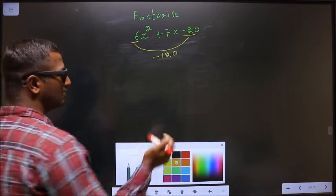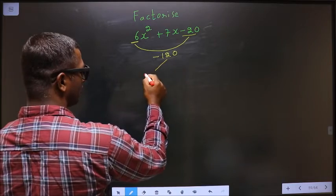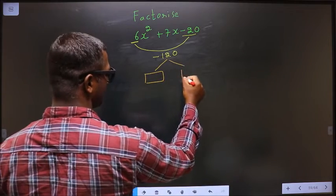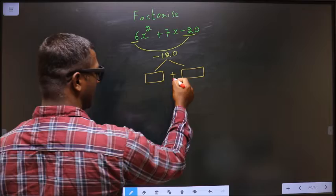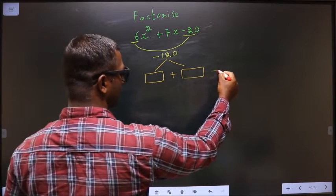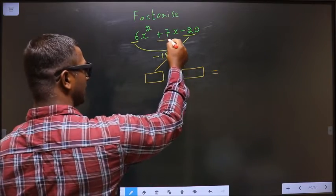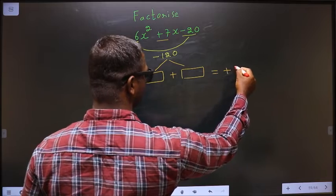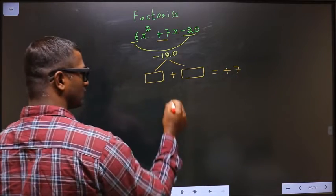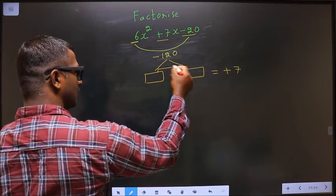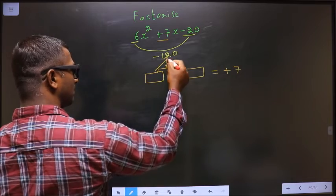Next step. Now you should look out for two numbers such that when you add the two numbers, you should get the x coefficient, that is +7 here. And also when you multiply these two, you should get -120.